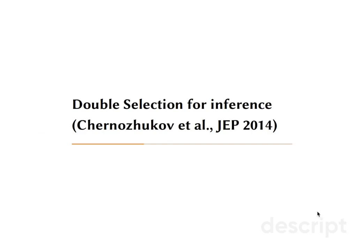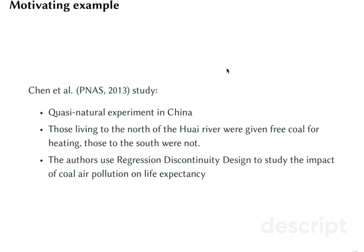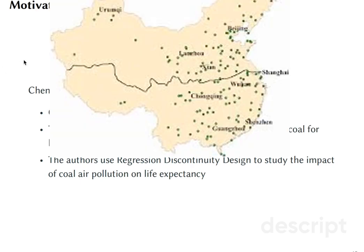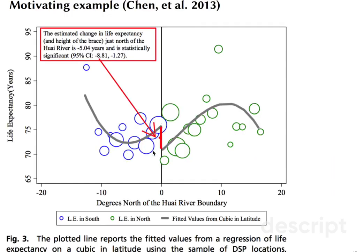Let's briefly recap what we learned about double selection procedure for inference. I'd like to start with a motivating example. There is a study by Chen, Albinstein, Greenstone, and Lee published in 2013 on how air pollution affects life expectancy. They use a natural experiment in China where, according to a policy, those living to the north of the Huai River, which traverses through the center of China, were given free coal for heating while those to the south were not. They looked at the life expectancy of those living to the north versus the south and estimated the difference at the discontinuity threshold.